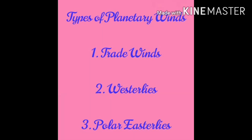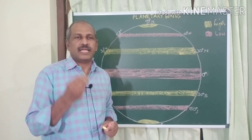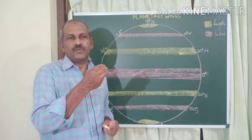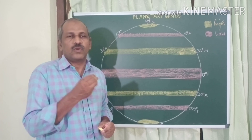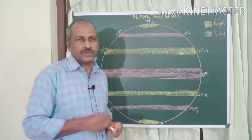There are different types of planetary winds blowing between definite pressure belts. They are: first, trade winds; second, westerlies; and third, polar easterlies. I will show you an illustration where you can see the different types of planetary winds, the pressure belts between which they blow, and their names.